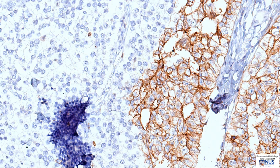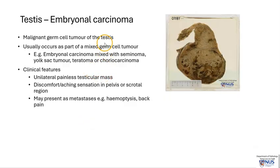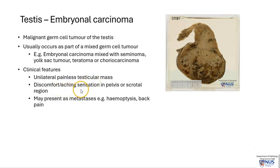Embryonal carcinoma is a malignant germ cell tumor of the testis which usually occurs as part of a mixed germ cell tumor. Occasionally it can be pure, but more frequently it occurs together with other germ cell tumors, for example seminoma, yolk sac tumor, teratoma, or choriocarcinoma. Clinically, patients usually present with a unilateral painless testicular mass. Sometimes there may be some discomfort or a dull aching sensation in the scrotal or pelvic region. Sometimes these patients may present with metastatic disease, for example hemoptysis if there are lung mets, or back pain if there are bone mets.